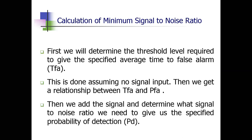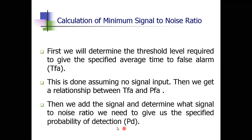These are the steps we will follow. First, we find TFA - the time to false alarm. Then we find PFA - the probability of false alarm - and establish a relation between TFA and PFA. The main goal is to find the minimum SNR required to achieve a specified probability of detection and probability of false alarm. We add the signal and determine what signal-to-noise ratio gives us the specified probability of detection.